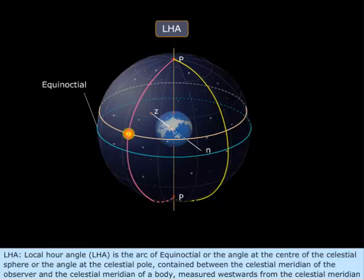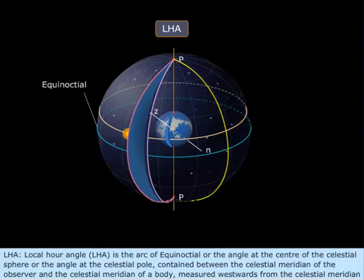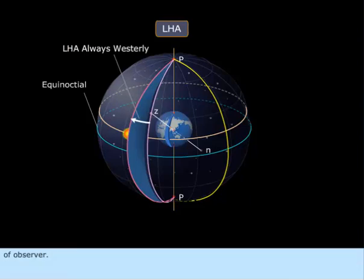Local Hour Angle, or LHA, is the arc of the equinoctial, or the angle at the center of the celestial sphere, or the angle at the celestial pole, contained between the celestial meridian of the observer and the celestial meridian of a body, measured westwards from the celestial meridian of the observer.